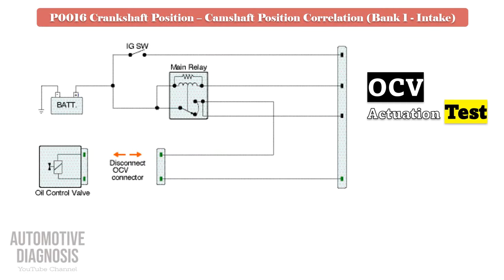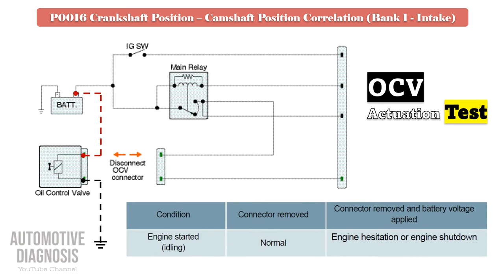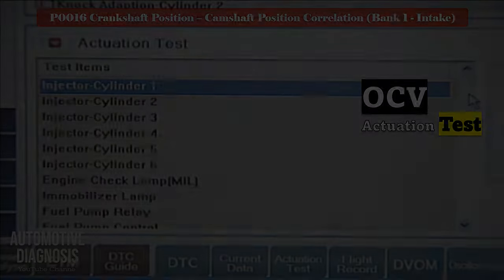Remove the OCV connector, then start the engine. Apply battery positive and negative to OCV when the engine is running. If the solenoid is functioning, the engine must hesitate or stall. So if after activating the solenoid in test you do not see any changes in engine operation, it means the OCV might be faulty, and you must remove the OCV to do more tests.